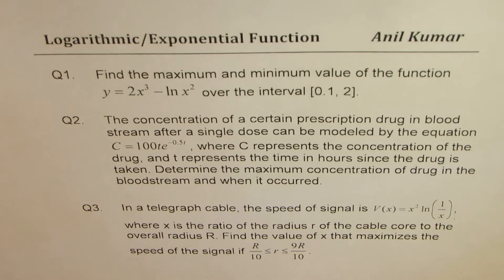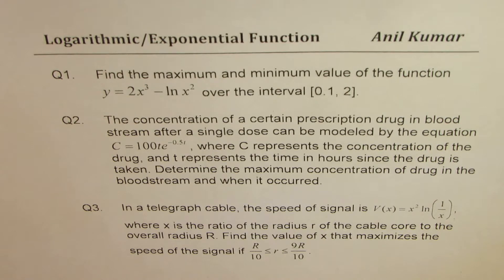modeled by the equation C equals 100t·e^(−0.5t), where C represents the concentration of the drug and T represents the time in hours since the drug is taken. Determine the maximum concentration of the drug in the bloodstream and when it occurred. This is another maximum/minimum question.